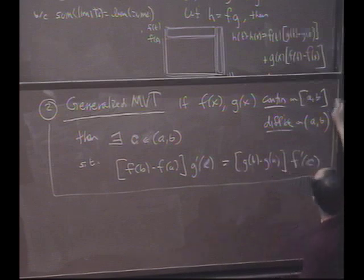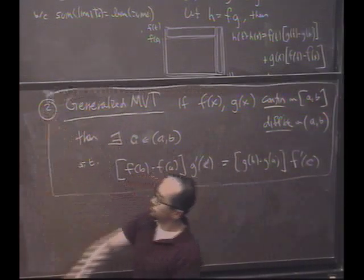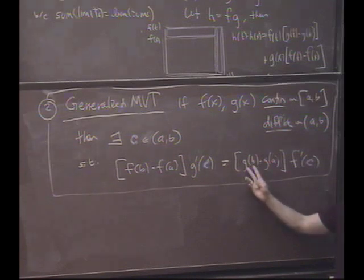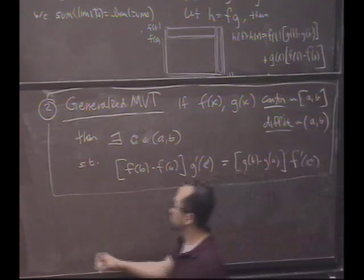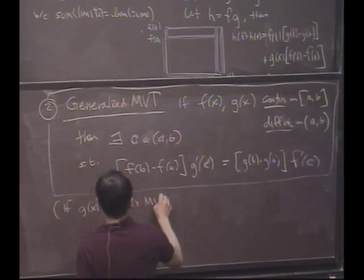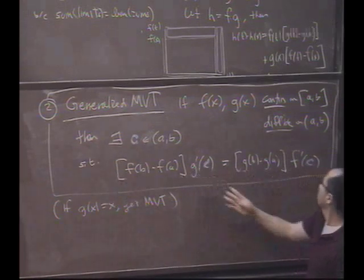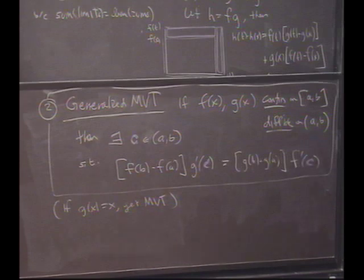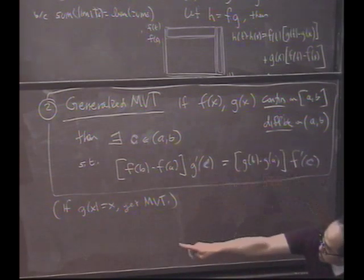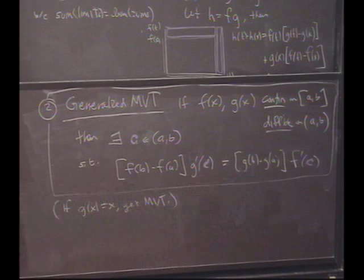And I want you to notice again that this point c, I don't know anything about except it's in the interval somewhere, appears on both sides of this equation. Why is this called the generalized mean value theorem? Yeah, g could be, g of x could be x. And if you do that, you get the regular mean value theorem. So notice, if g of x equals x, we get the mean value theorem. Because the derivative is one, and this becomes b minus a. So let me prove the generalized mean value theorem, and we'll use our first observation, mini observation one.